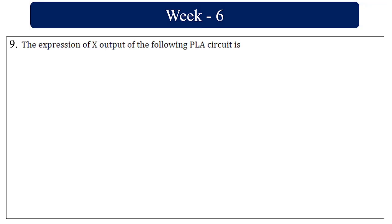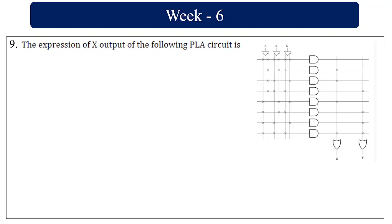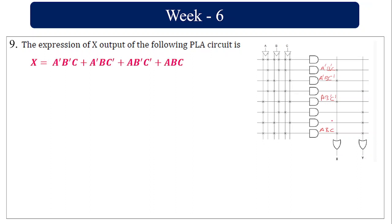The expression for x at the output of the PLA circuit: a PLA is constructed with AND gates followed by OR gates. Reading the AND gate outputs — original and inverted inputs — we get: x = Ā·B̄·C + Ā·B·C̄ + A·B̄·C̄ + A·B·C.